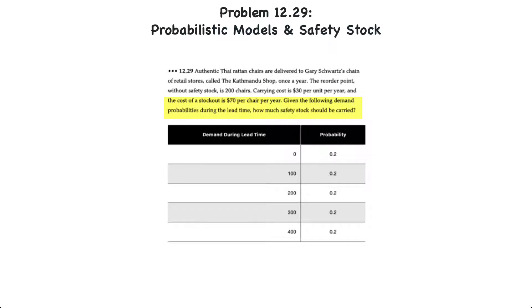In the table below we have a series of demand probabilities during the lead time and we're asked to determine how much safety stock should be carried. We have lead time demand ranging from 0 units to 400 units in 100 unit increments and the probability of each level of demand is even at 20% across the board.